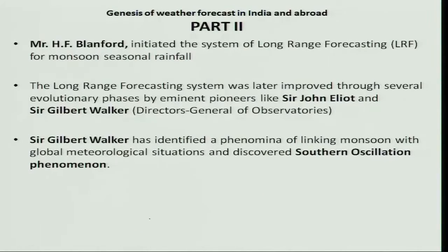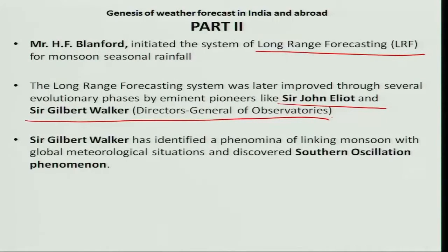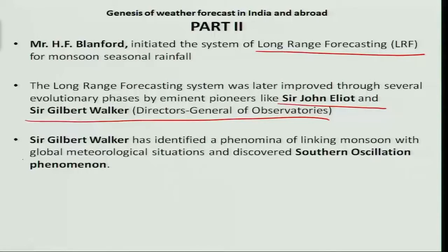Regarding improvement in the weather forecasting system: Mr. H. F. Blanford initiated the system called long range forecasting to predict monsoon seasonal rainfall. The long range forecasting system was continuously improved by eminent scientists Sir John Elliot and Sir Gilbert Walker, both Directors General of the Observatories. Sir Gilbert Walker, an eminent mathematician, identified the phenomenon linking monsoon with global meteorological situations and discovered the phenomenon of the Southern Oscillation, which was later called El Niño.